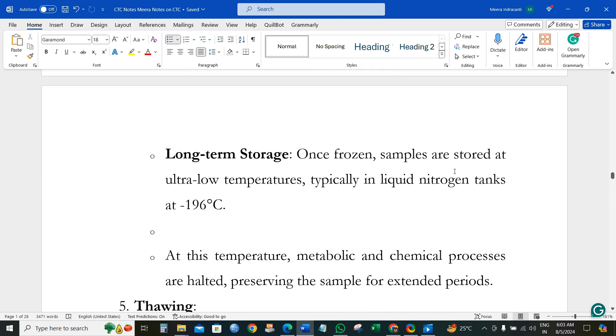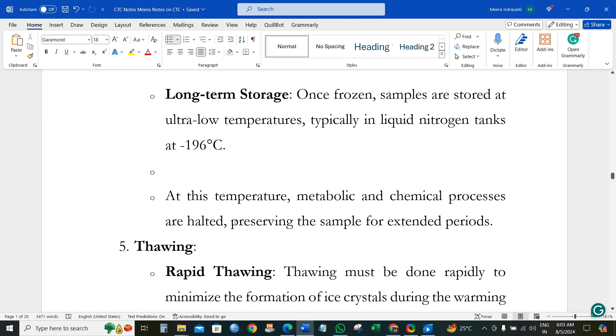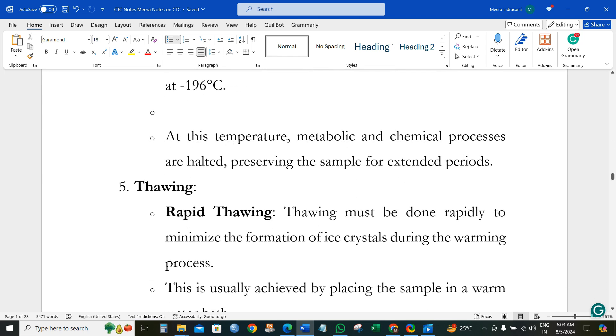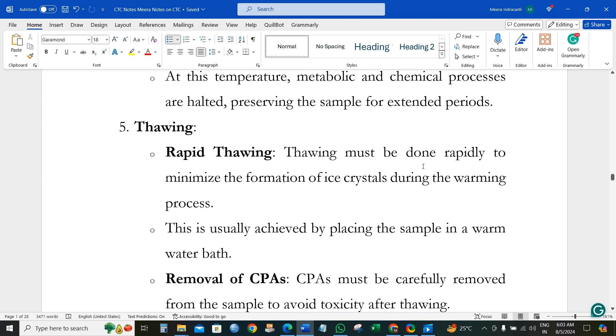For long-term storage, once we freeze the samples, they can be stored at low temperature in liquid nitrogen at minus 196 degrees centigrade. At this temperature, no metabolic and cellular processes will be carried out. Whenever we require the cells to be used, we can take them out from the liquid nitrogen container.